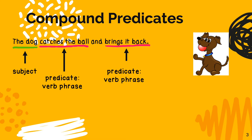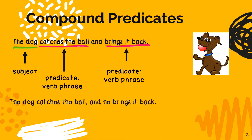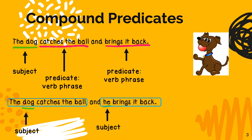Now let's look at this example: 'The dog catches the ball and he brings it back.' This sentence is not an example of a sentence with a compound predicate. This sentence is an example of a compound sentence because it has two sentences. Because there are two sentences, it has two subjects — the dog is the subject of the first sentence, and he is the subject of the second sentence. Because it has two complete sentences in one, it is not an example of a sentence with a compound predicate.